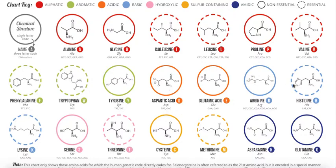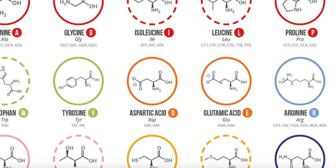Up here you have the polar charged groups. Everything that is charged is going to be polar because it likes to interact with water — the negative charge can interact with the hydrogen of the water molecule because that hydrogen has a partial positive charge due to the strong electronegativity of oxygen. These are also acidic amino acids: aspartate and glutamate are acidic. Arginine, histidine, and lysine are basic. The acidic ones like to donate protons easily because they have an extra carboxyl group in addition to the one common to every amino acid. Aspartate and glutamate actually only differ by one carbon.